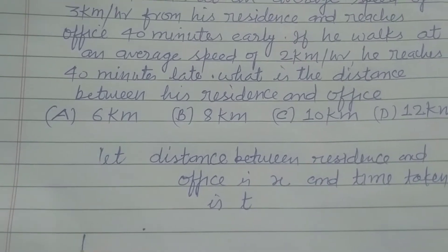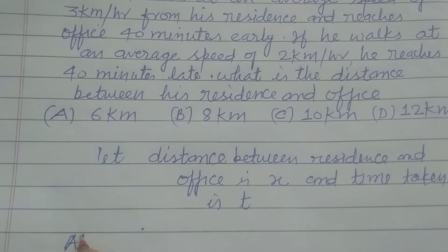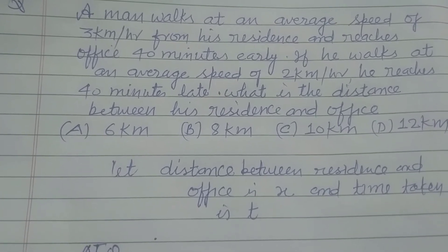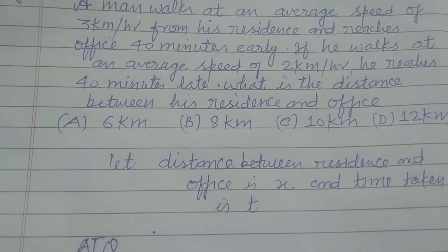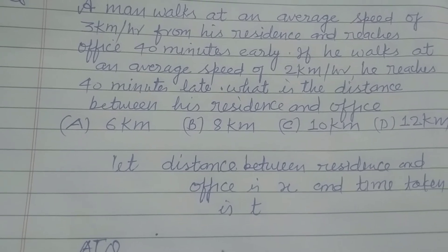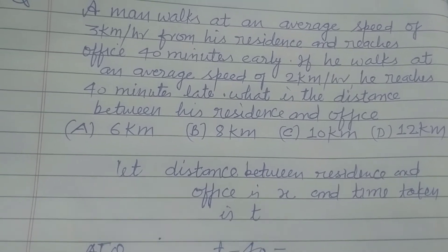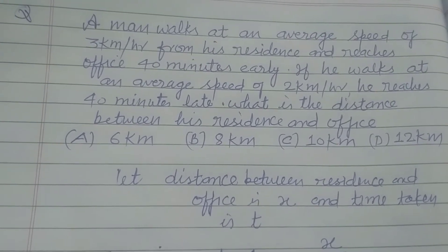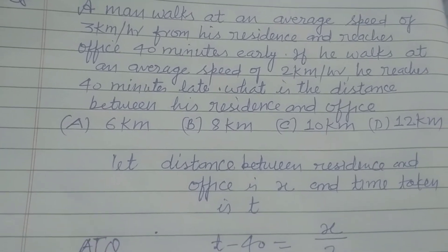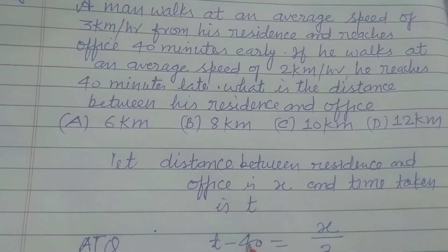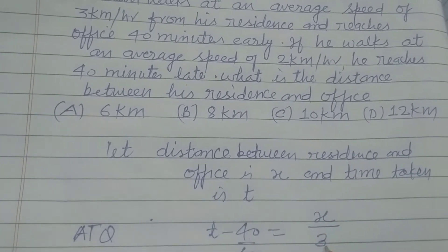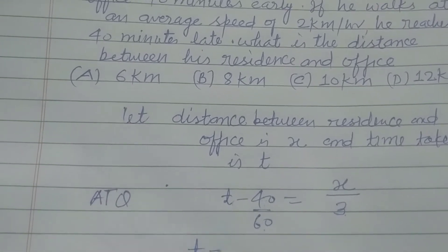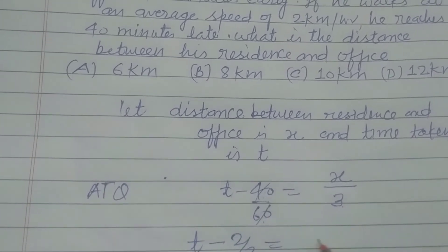According to the question (ATQ): if a man walks at an average speed of 3 kmph and reaches the office 40 minutes early, that means the time taken is (t - 40) minutes. Since speed is in kmph, we convert to hours: (t - 40)/60. So our first equation is: (t - 40/60) = x/3.